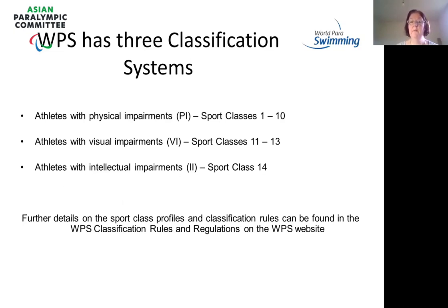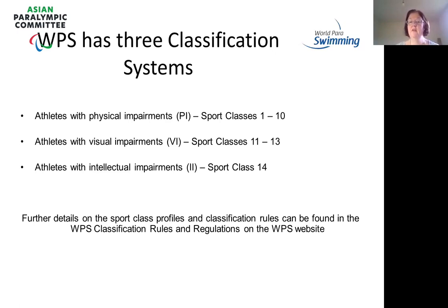Athletes with a visual impairment — our VI structure — have three classes. Sport class 11 is our most impaired; they will technically be classed as legally blind, even though they may have some peripheral or colour contrast vision. Up to class 13, which are our least impaired athletes. Athletes with an intellectual impairment — our II athletes — have a single class: sport class 14. Further details on sports class profiles and all classification rules can be found on the website, along with each athlete's classification status. It's all open and transparent for viewing.